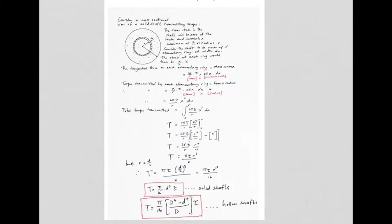For a hollow shaft, the maximum stress also occurs in the outermost fiber. Of interest, the hollow shaft has no point where the stress is zero. In the solid shaft, stress was zero at the middle; in the hollow shaft there is no material in the middle, so stress simply reduces to a lesser value at the inside diameter.